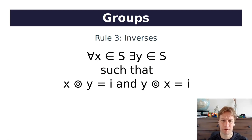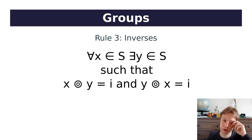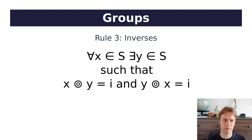In maths we say: for all x that are members of S, there exists a y that is also a member of S, such that x dot y equals the identity and y dot x equals the identity. We check both x dot y and y dot x because in some cases those could give you different answers. The point is: for everything in S, there must be something else in S such that you can get back the identity by combining them together. You can imagine how this is a useful rule for doing arithmetic when you need to cancel something out.